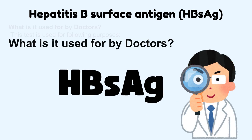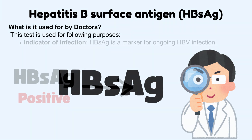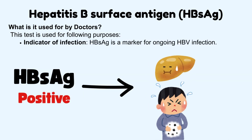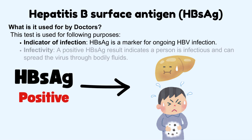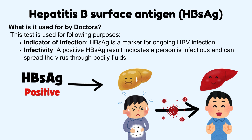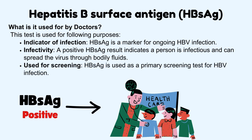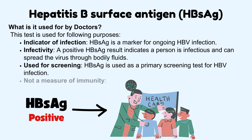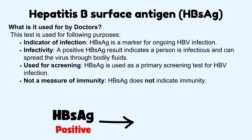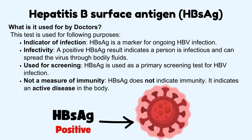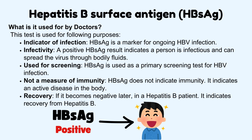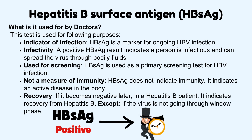HBsAg is used for the following purposes. As an indicator of infection: HBsAg is a marker for ongoing hepatitis B infection. Infectivity: a positive HBsAg result indicates a person is infectious and can spread the virus through bodily fluids. It is used for screening as a primary screening test for HBV infection. It does not indicate immunity — it indicates active disease in the body. If it becomes negative later in a hepatitis B patient, it indicates recovery, except if the virus is going through the window phase.